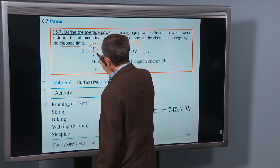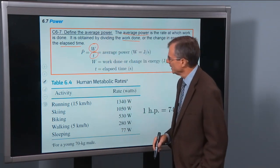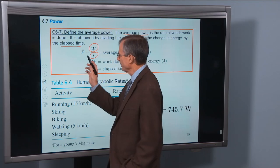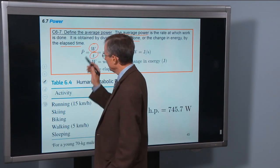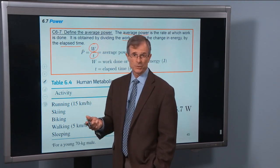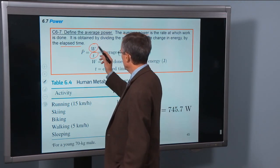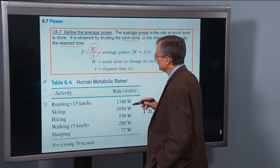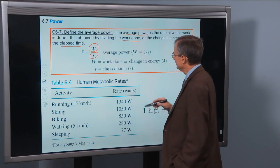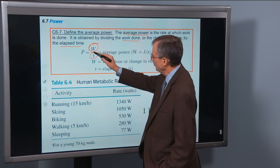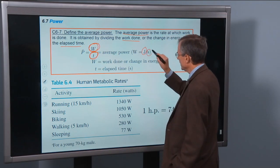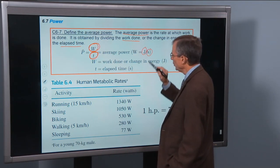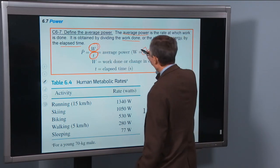So it's work divided by time. We use the letter P to denote power, with a bar over the top to denote average. It's measured in joules for work and seconds for time. One joule per second is called the watt.